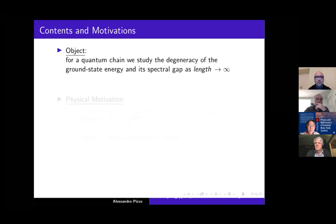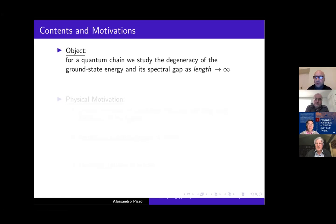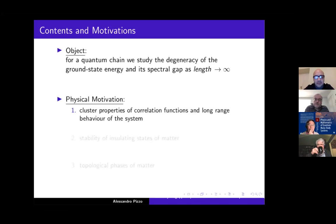More precisely, we will consider a non-perturbed Hamiltonian that is already gapped in the thermodynamic limit, as the length tends to infinity. Then we add a perturbation that consists of terms that are locally small, and we want to check whether the spectral gap is still there as the length tends to infinity. The physical motivation comes from statistical mechanics. Indeed, the cluster properties of the correlation functions of the system at temperature T equals zero — which are expectation values of products of observables in the ground state — are related to the spectral gap.